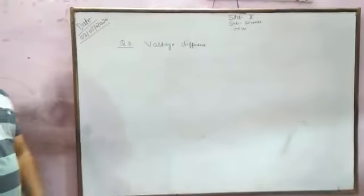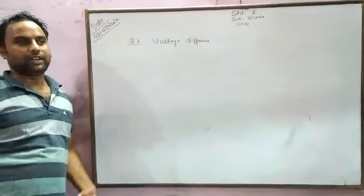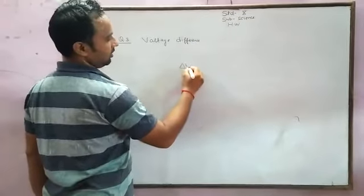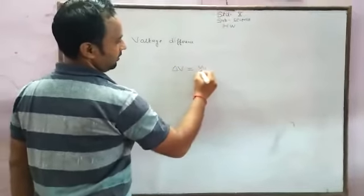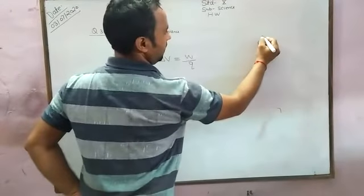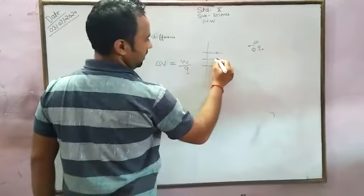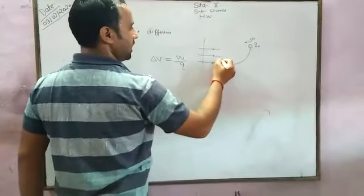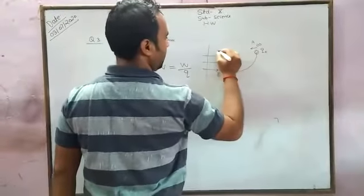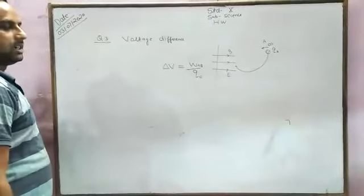What is the voltage difference? Simply, the definition says that if we are taking a charge from infinity to a point where the external electric field is present, that work done per unit charge is known as potential difference — that is the potential difference delta V. The potential difference is equal to net work done upon test charge. The work done when moving from point A to point B divided by test charge Q0. That is the definition of the potential difference.